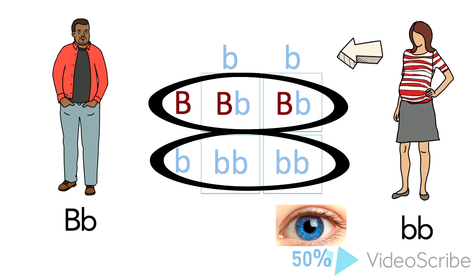In this case, the chances for that are 50%. The method shown to display these patterns of inheritance is called a Punnett square.